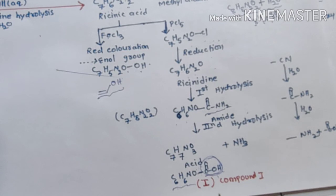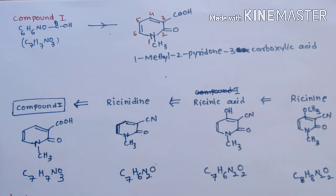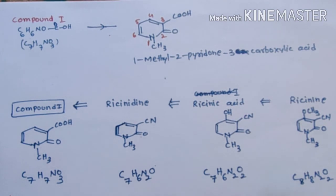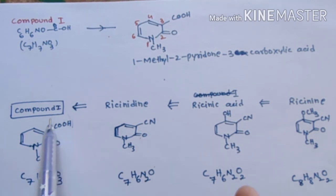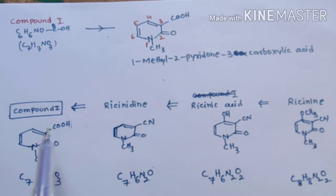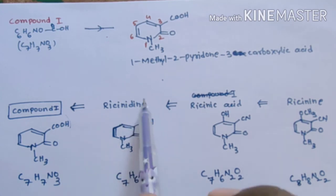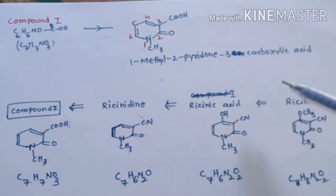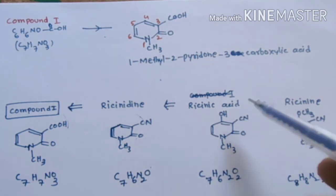The formula of the carboxylic acid is C6H6N2O2. This compound (Compound 1) is found to be 1-methyl-2-pyridone-3-carboxylic acid by its synthesis. Since we obtained Compound 1 by hydrolysis of resinidine, we replace the carboxylic acid group of Compound 1 with a cyanide group in resinidine.